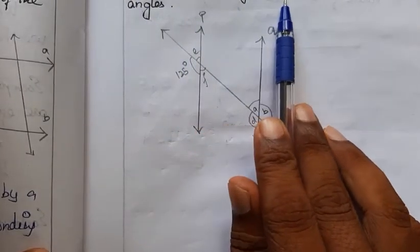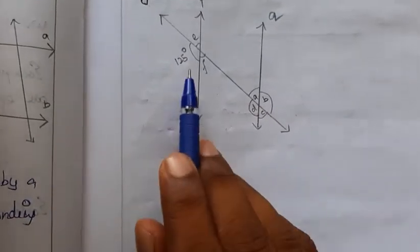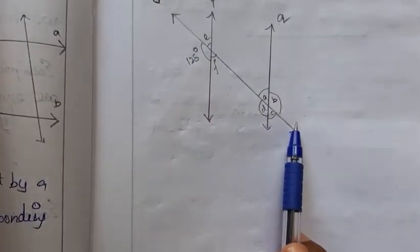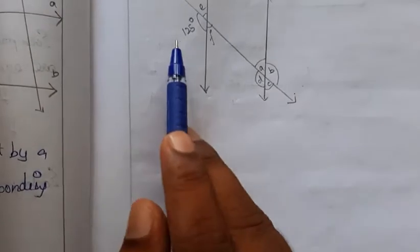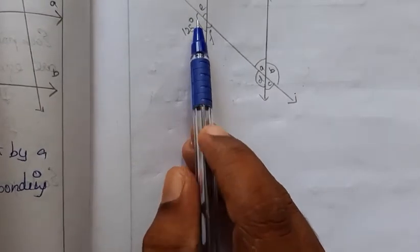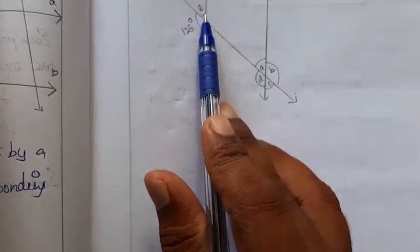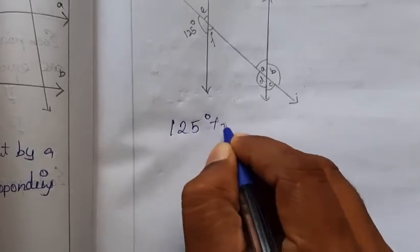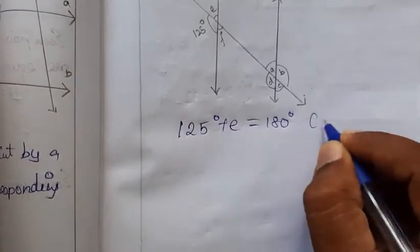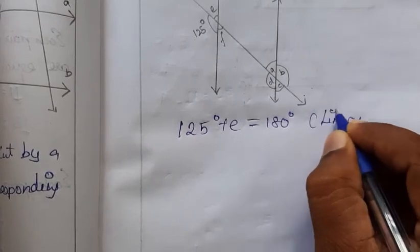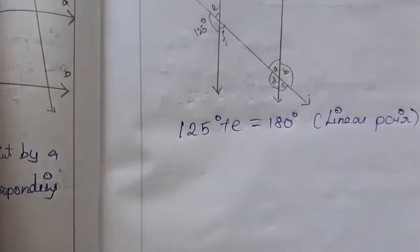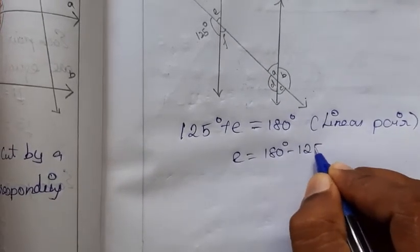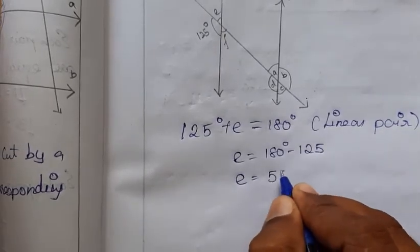Problem: In the adjoining figure, P is parallel to Q. Find the unknown angles. One angle is given as 125 degrees. Angle 125 and angle E form a linear pair, so 125 plus E equals 180. Therefore E equals 180 minus 125, so E equals 55 degrees.